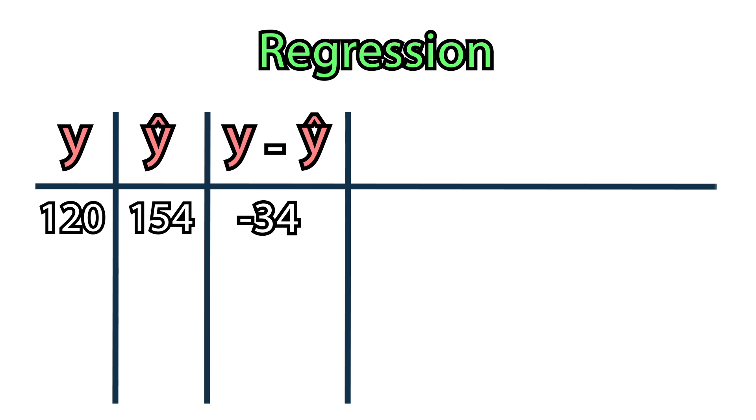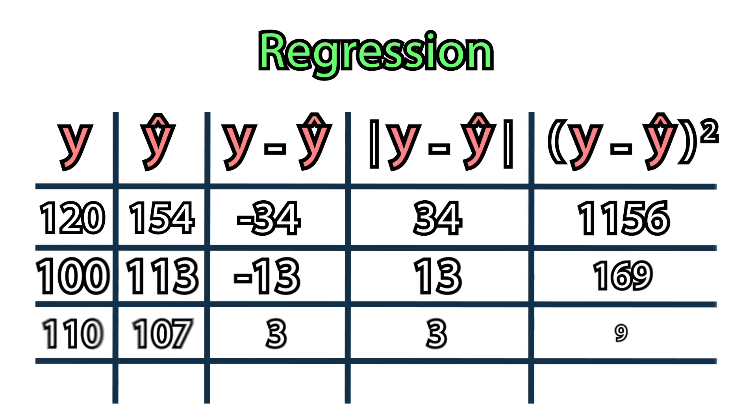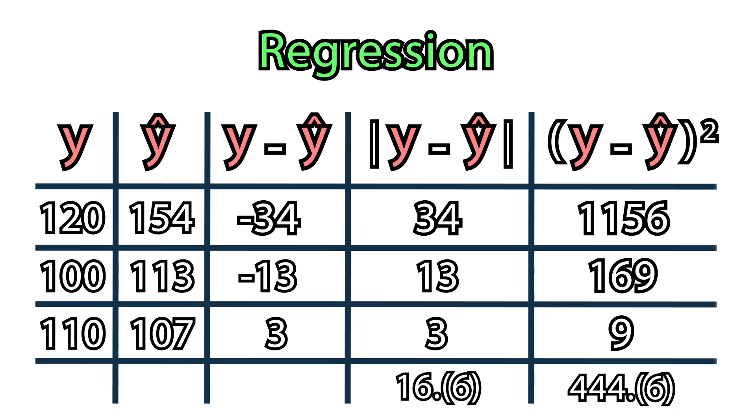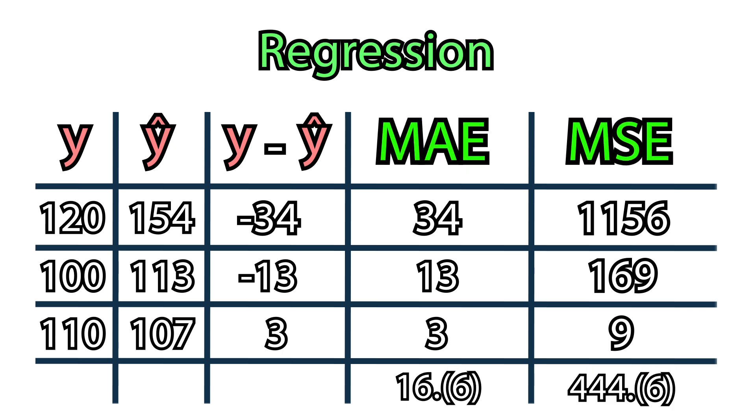Then, to avoid getting negative numbers, we can take either the absolute difference or square it. Lastly, the errors for all observations are averaged. These are the two most common losses used in regression problems: mean absolute error and mean squared error.